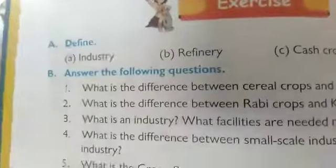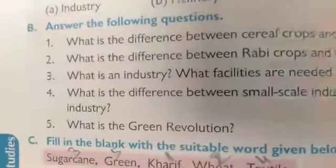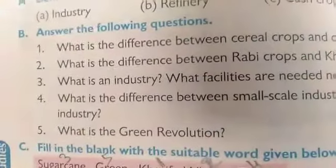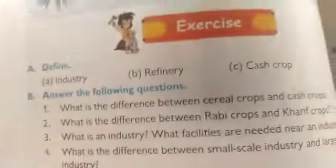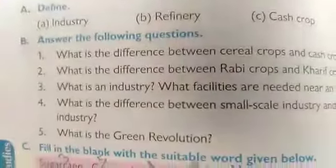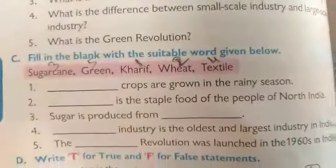Open page number 290, all of you. The A section is defined and B section is answer the following questions. I will send you a photocopy. You write down in your classwork neatly and come to the C section.